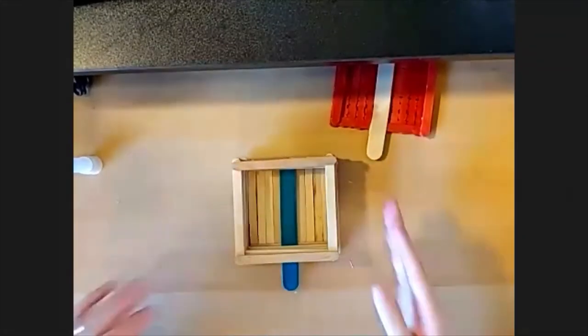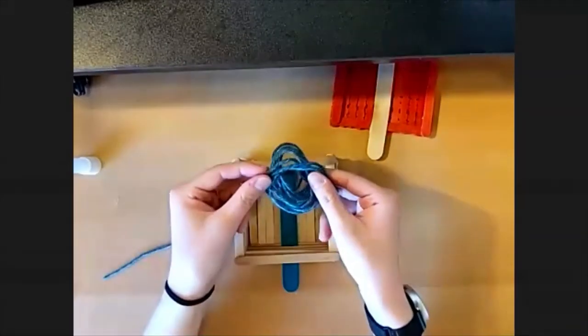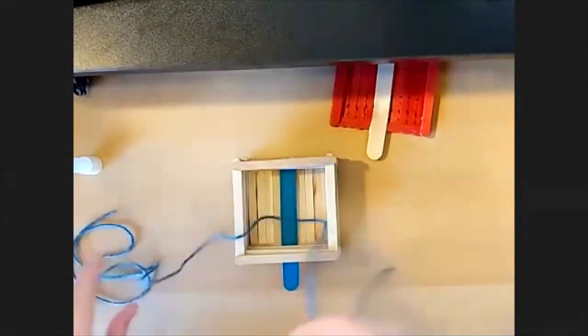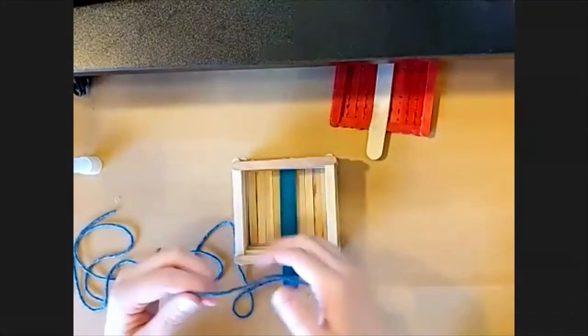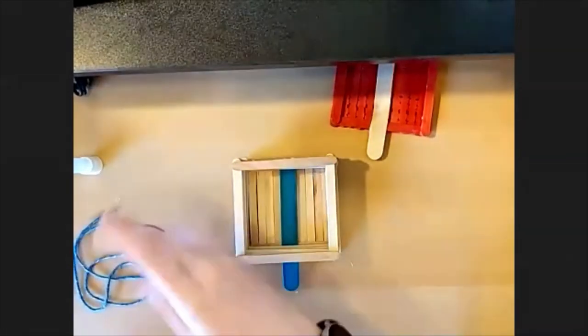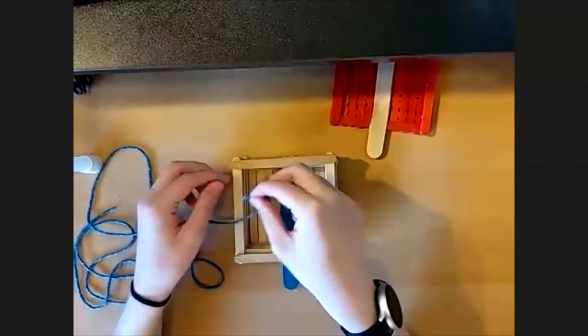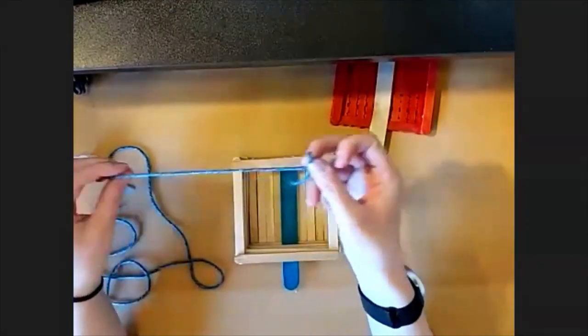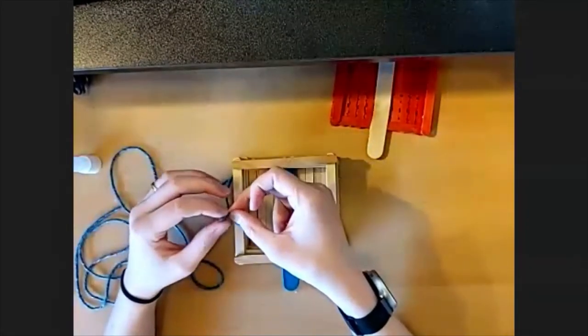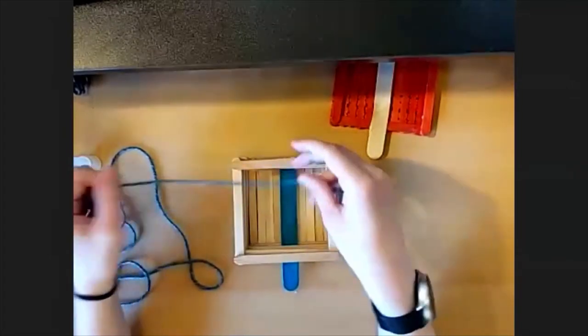And once you get to this step, you'll take the string that was in your kit. You have some sturdier string if you got a kit from the library. I just have yarn. Sturdier is probably better if you want it to hold up, but either works. So we're going to, I'm trying to remember which way this needs to be threaded.